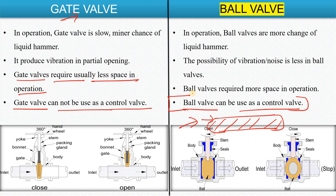Gate valves require less space in operation because you simply rotate the wheel to open or close. Ball valves require more space in operation because there is a handle that needs to swing through 90 degrees to open or close, requiring clearance around it.